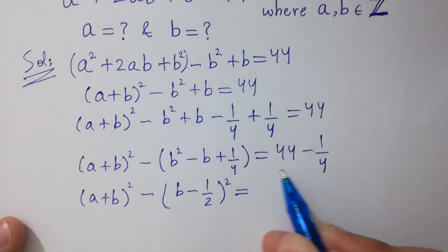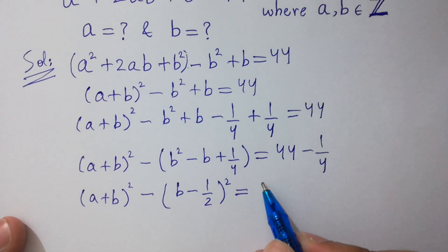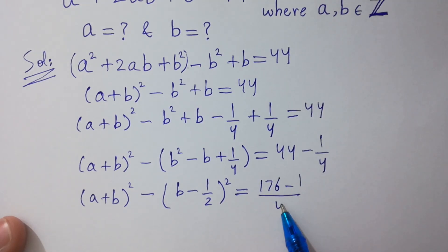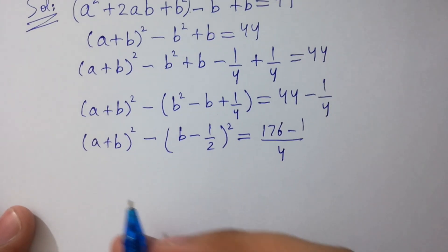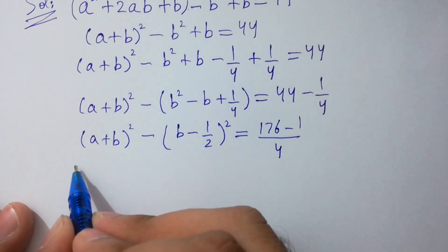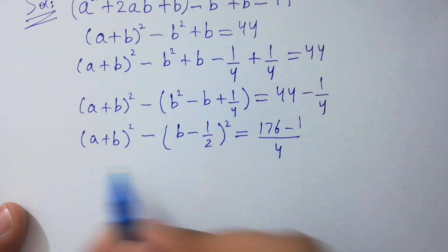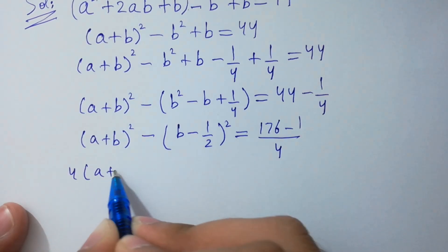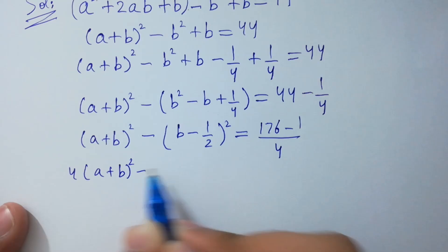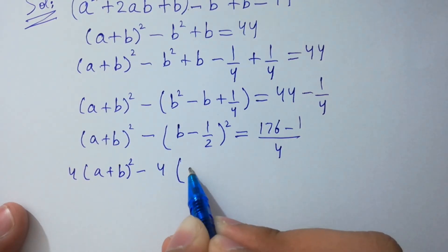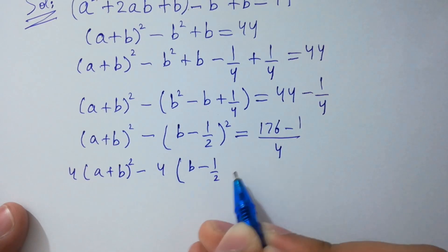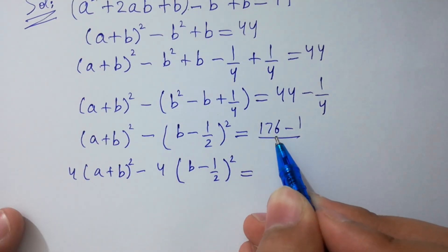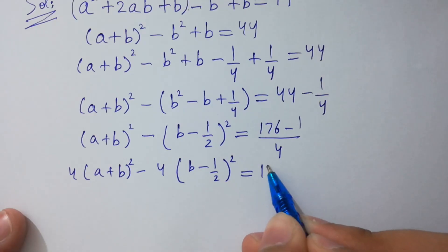Multiplying both sides by 4: 4 times 44 equals 176 minus 1 over 4. So we get a plus b whole square minus b minus 1 over 2 whole square equal to 176 minus 1, which equals 175.